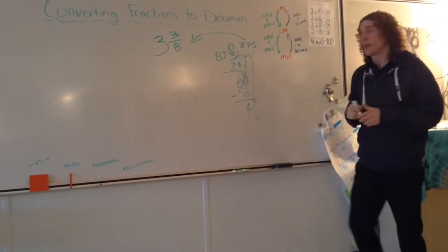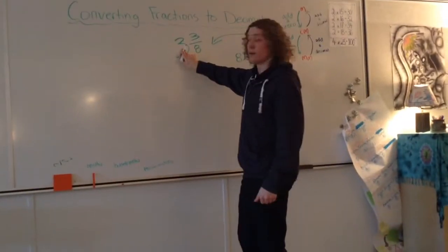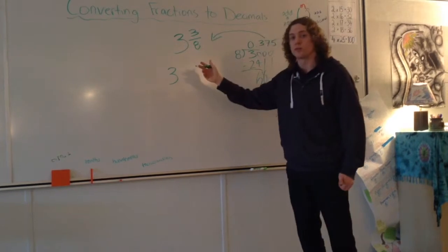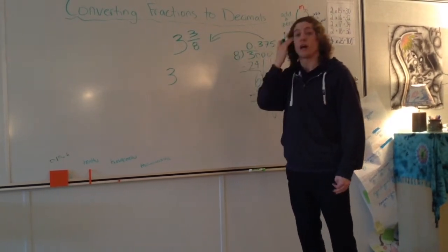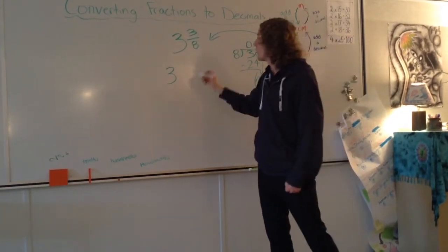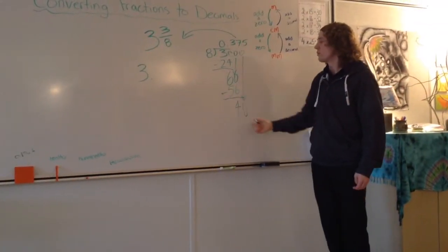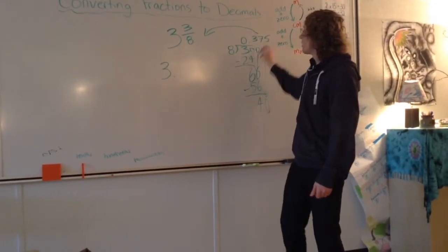Now we keep this number here the exact same. We'll just put it here because that's three wholes. We have three wholes and we have 3/8 left over. We have to convert that into a decimal, but we already did that over here when we were doing long division. So we'll just plop these three numbers after the decimal: 3, 7, 5.